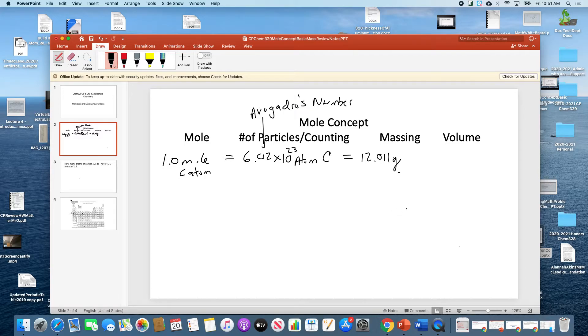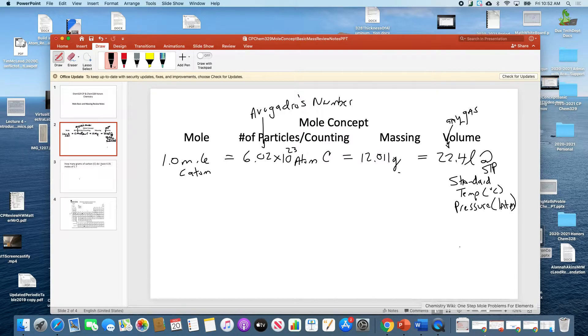If it was a gas, it would actually occupy 22.4 liters. And that's for any gas, any gas, it doesn't make a difference to the type of gas. And there's a caveat, which is called at STP. STP stands for standard temp, which is 0 degrees C, and pressure, which is one atmosphere.